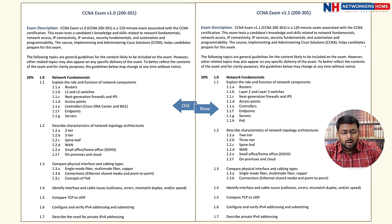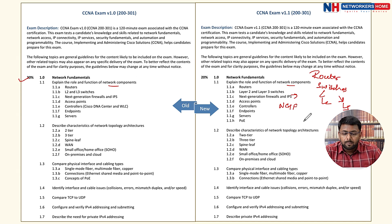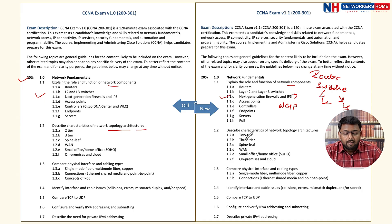In both version 1.0 and version 1.1, Network Fundamentals begins with the roles and functions of network components. These include routers, Layer 2 switches, Layer 3 switches, next-generation firewalls, IPS (Intrusion Prevention System), controllers, end devices, servers, and Power over Ethernet. We also discuss characteristics of network topology architectures: two-tier, three-tier, spine-leaf, WAN, SOHO, and on-premises cloud.